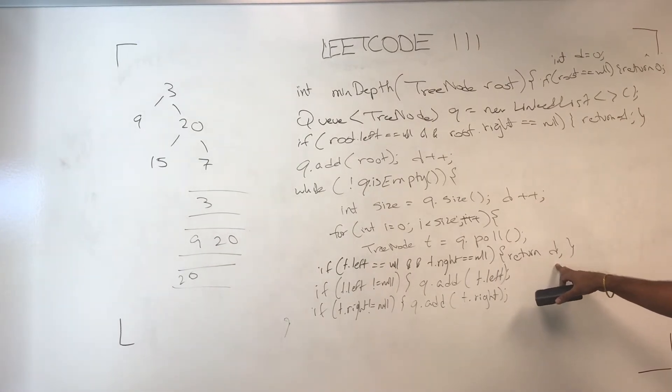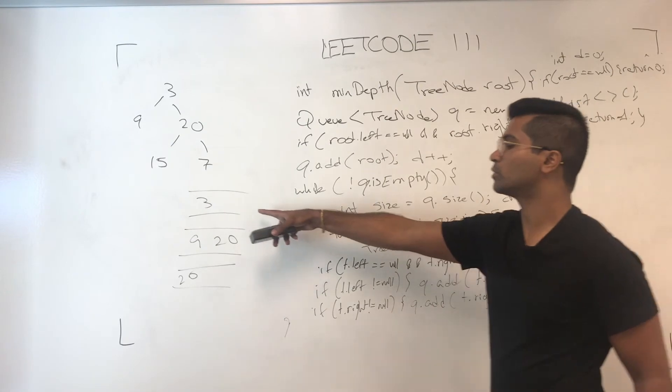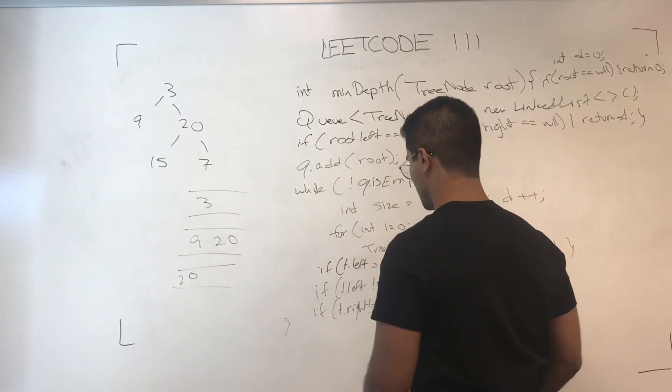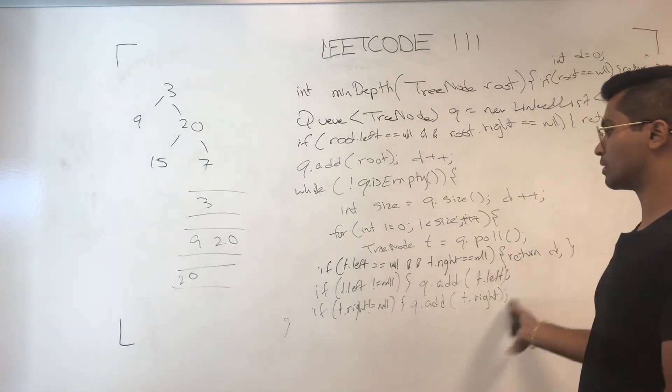Let's see how many times we incremented d twice. Once when you popped out 3, and once we popped out 9, and because we're done, it's going to return d.